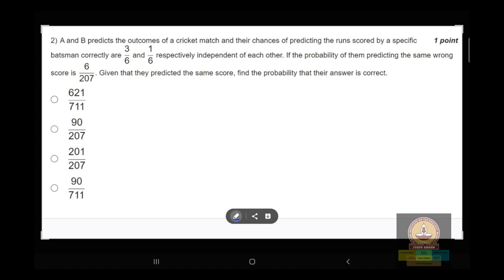Given that they predicted the same score, find the probability that the answer is correct. So first of all, I'll be introducing Bayes theorem from the lecture. Its formula is given by...